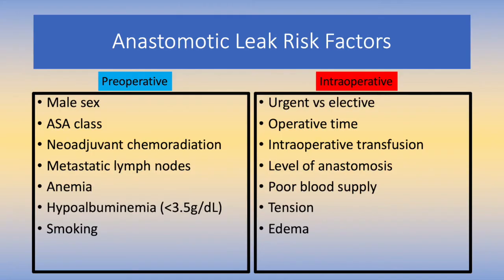There are many risk factors for leak. Preoperative risks specifically include male sex, ASA class, prior or neoadjuvant chemoradiation, presence of metastatic lymph nodes, anemia, malnutrition, and a smoking history. Intraoperative factors include the urgency of the surgery, operative length, intraoperative transfusion, the level of anastomosis, ischemia, tension, and edema.